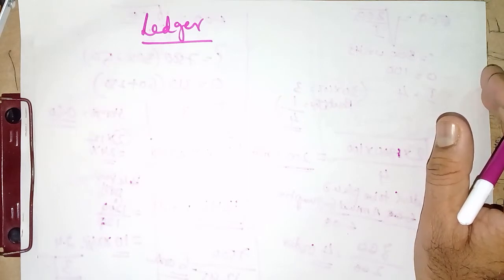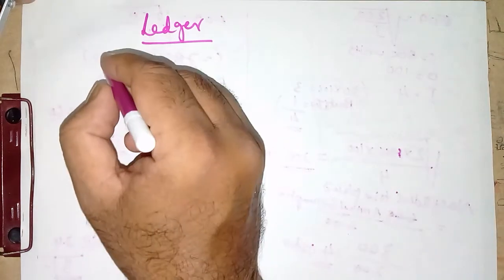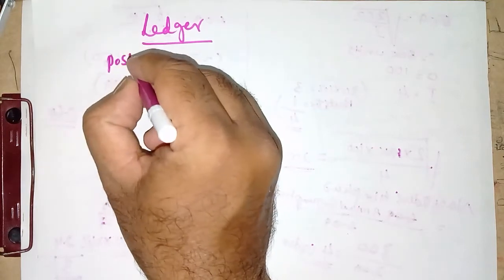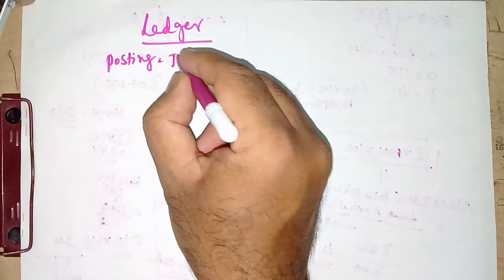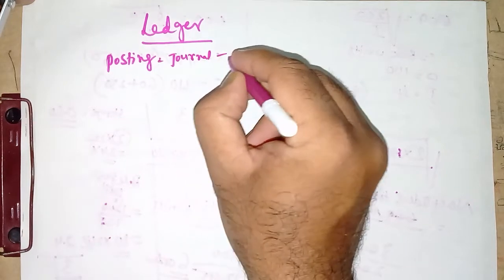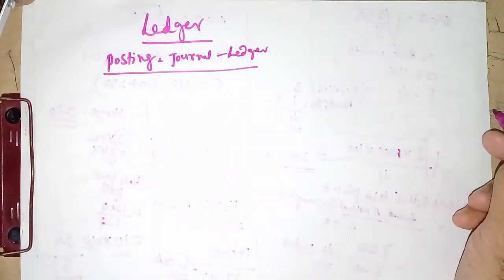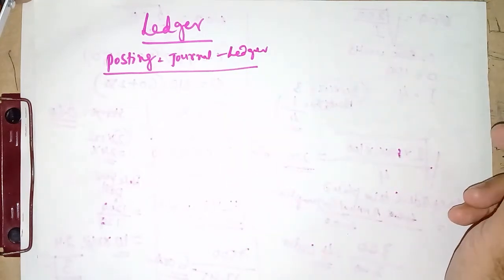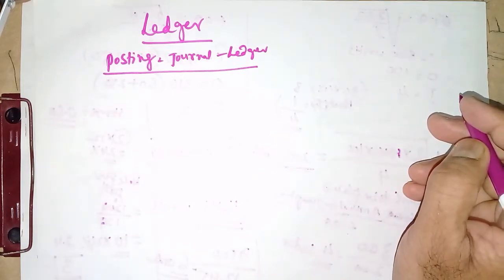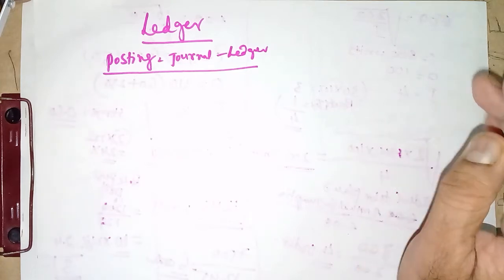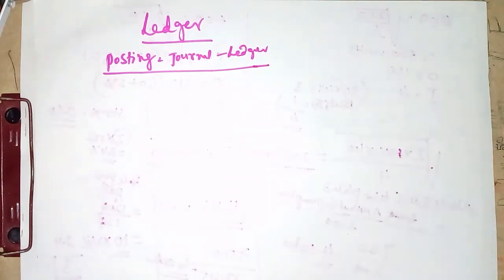The word we use is 'posting' — from journal to ledger. If you see the limitation of journal, in journal all transactions are recorded without any division, without any segregation, without any discrimination. All transactions are recorded as and when they take place in chronological order.